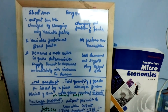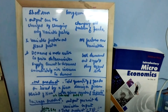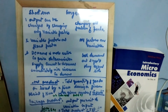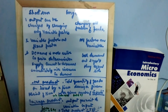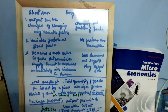In short run, demand is more active in price determination because supply cannot be increased immediately with an increase in demand — only variable factors can be changed. So when demand is more, that decides the price. In long run, both demand and supply play an equal role because you can increase supply by increasing all factors of production.